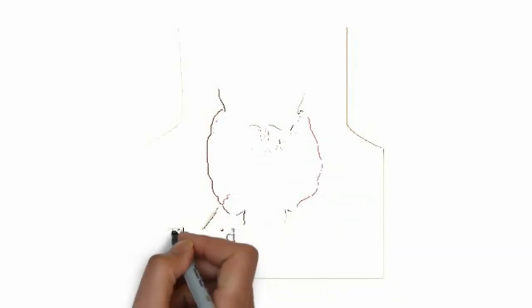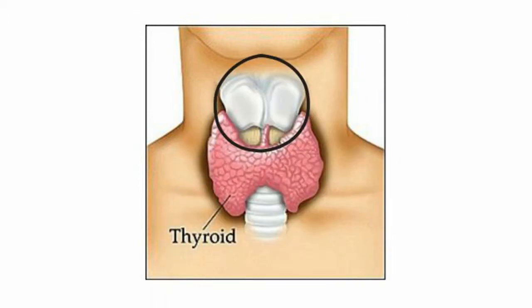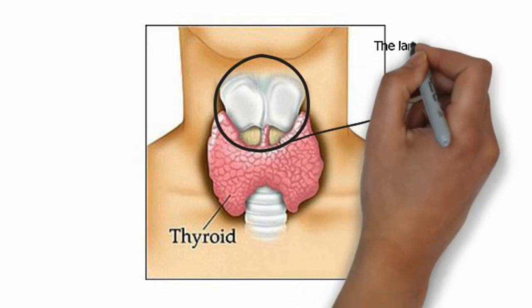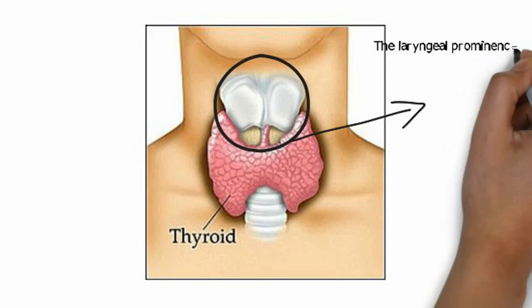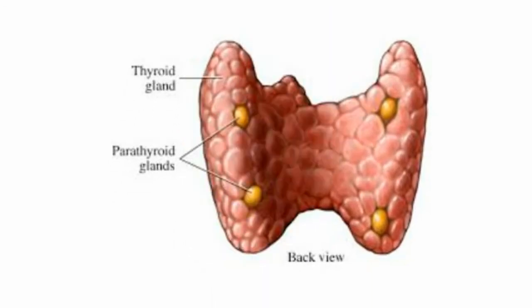The thyroid starts cranially at the oblique line on the thyroid cartilage, just below the laryngeal prominence or Adam's apple, and extends inferiorly to approximately the fifth or sixth tracheal ring. It is difficult to demarcate the gland's upper and lower borders with vertebral levels because it moves position in relation to these during swallowing.